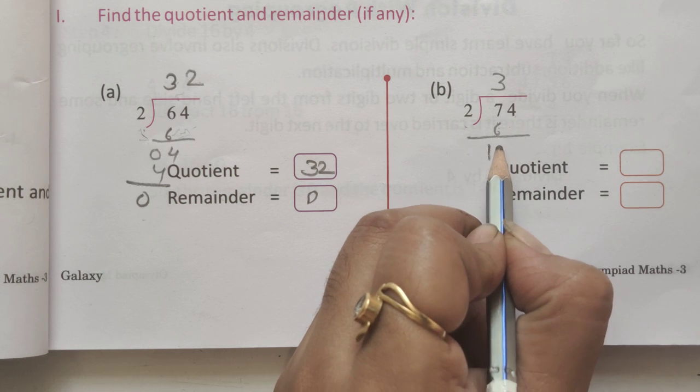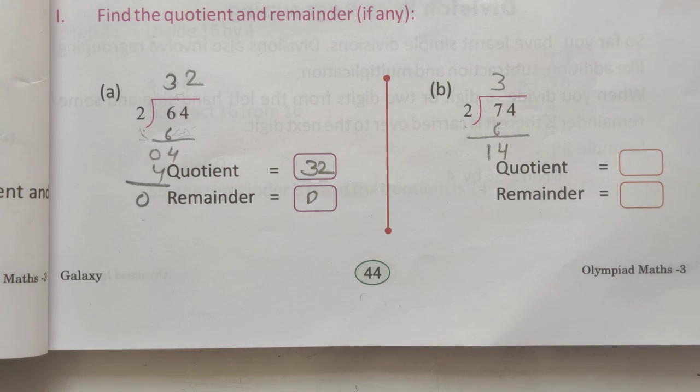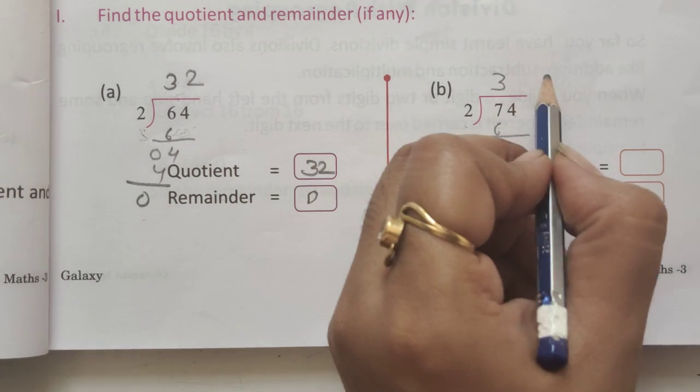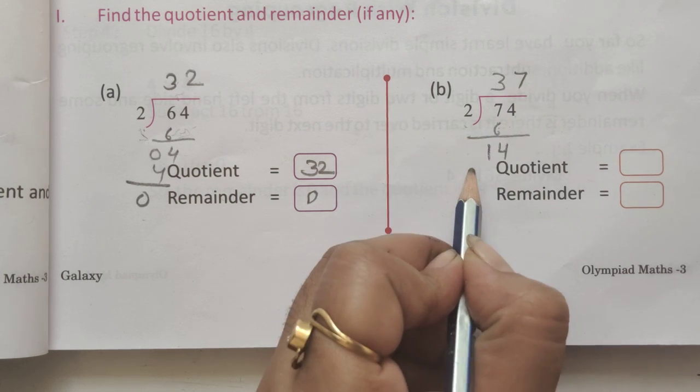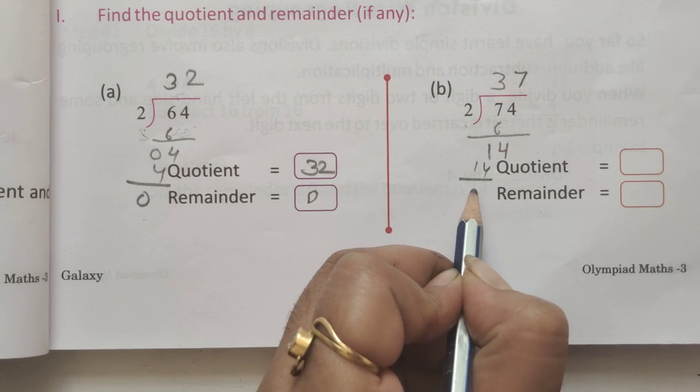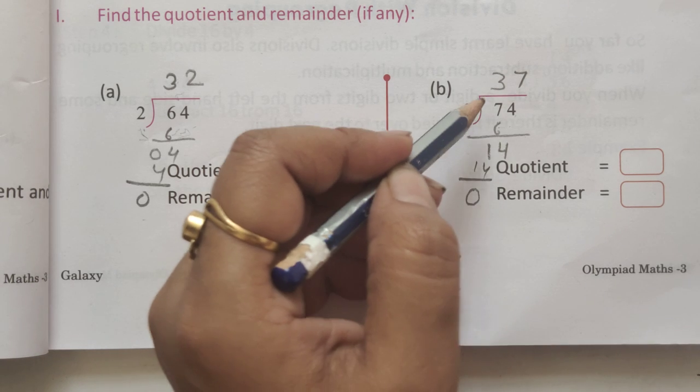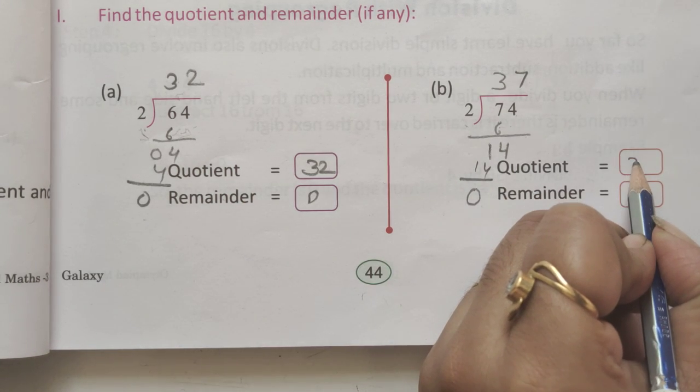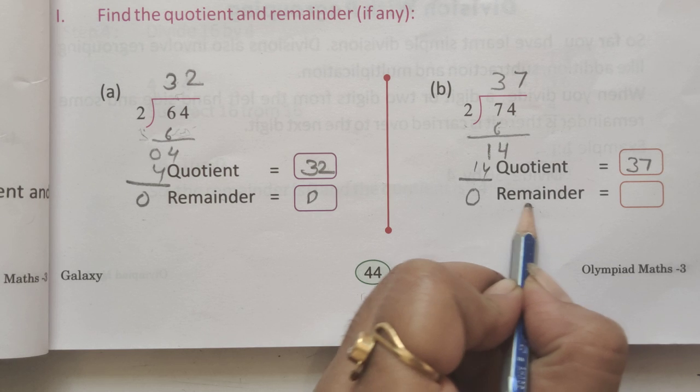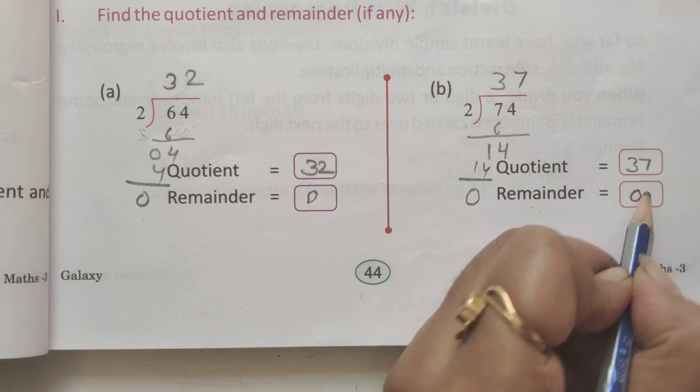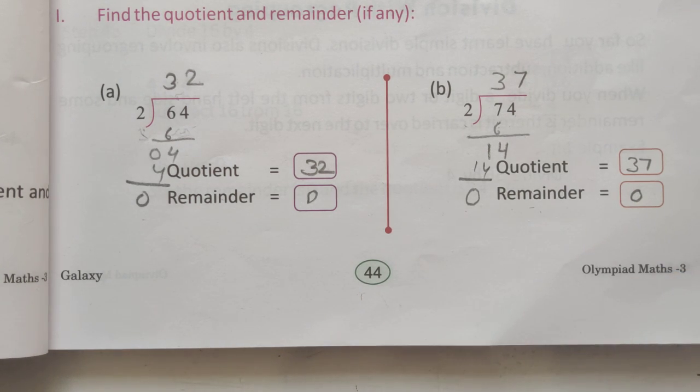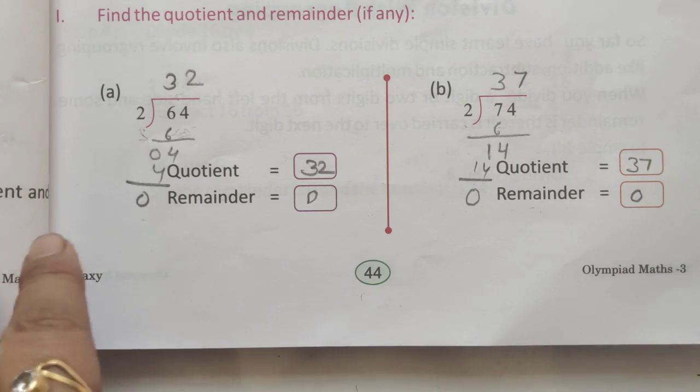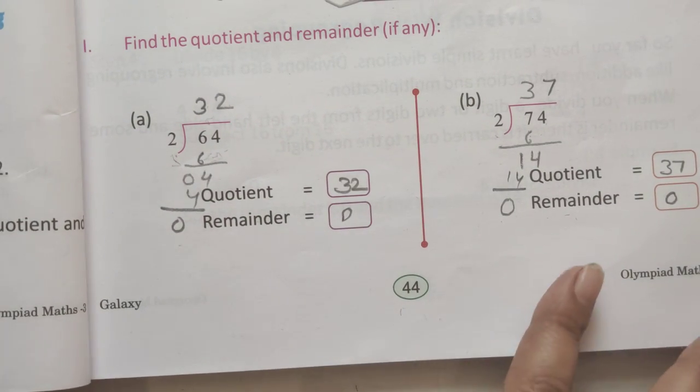2 sevens are 14, so the remainder is 0. The quotient is 37 and the remainder is 0. Is that clear to all of you? Turn to the next page.